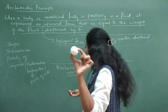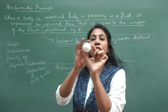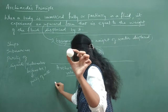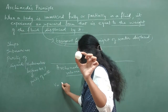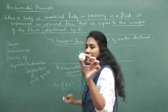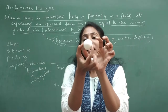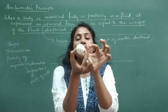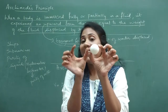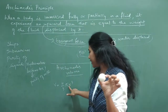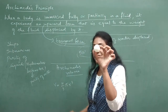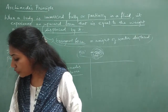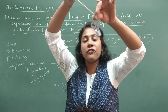The volume of a sphere is equal to 4/3 π r³. You can calculate the diameter using a thread or scale, divide by 2 to get the radius, substitute the value, and find the volume easily.